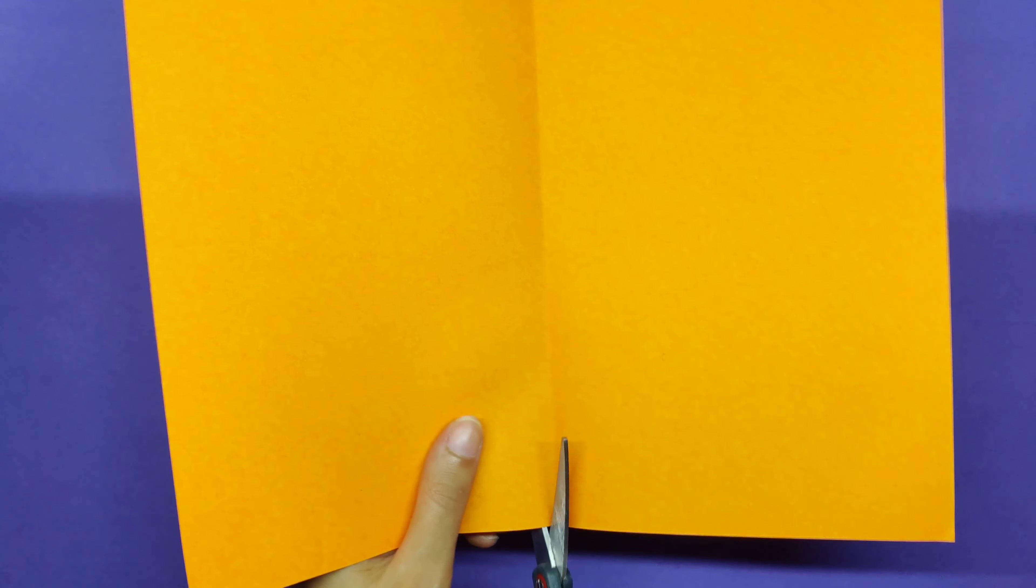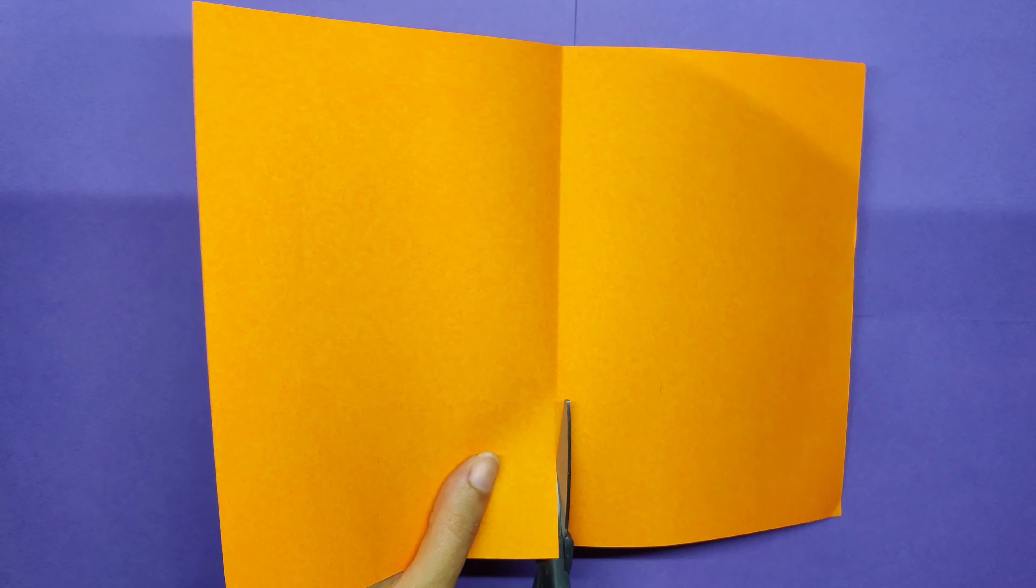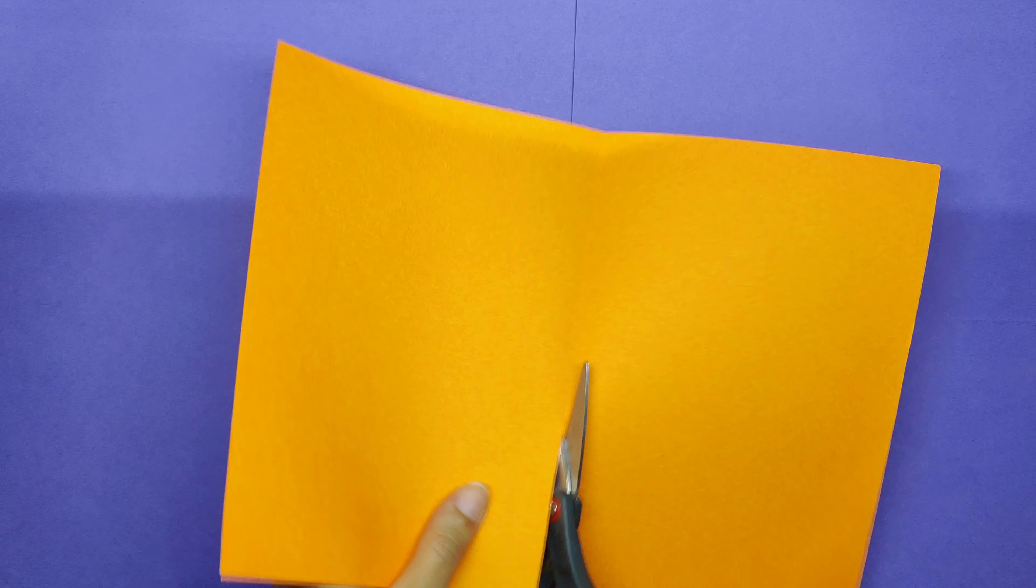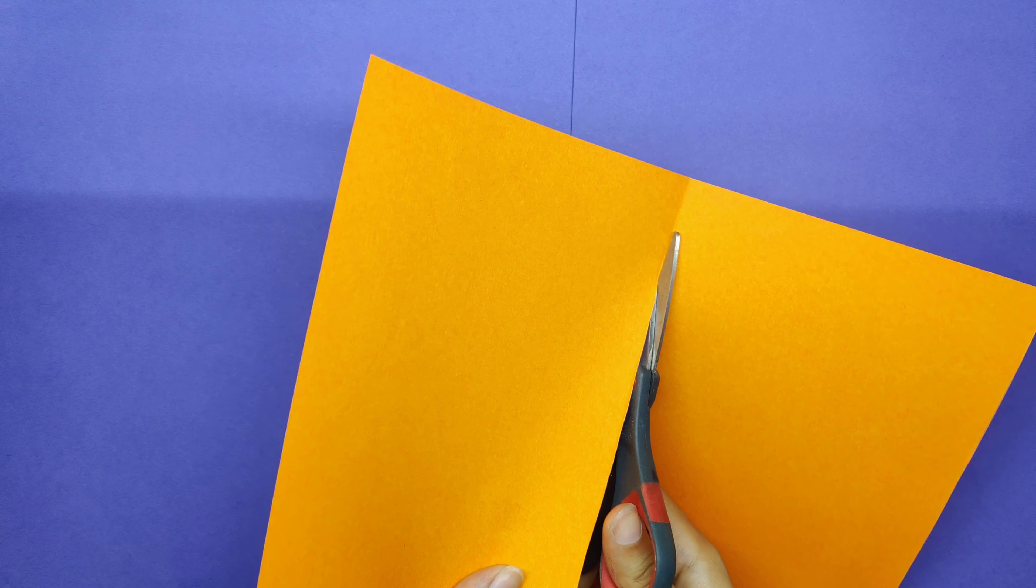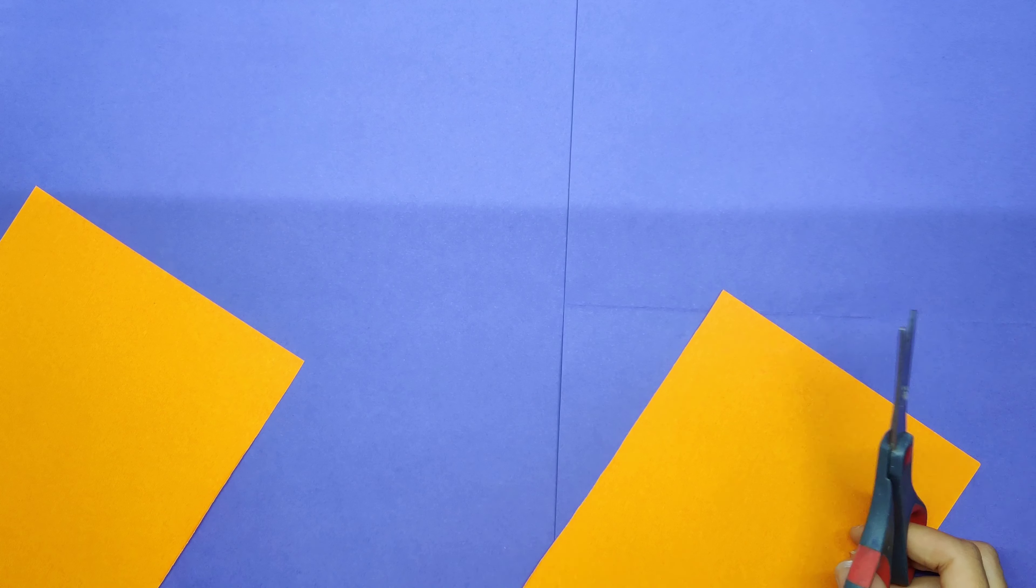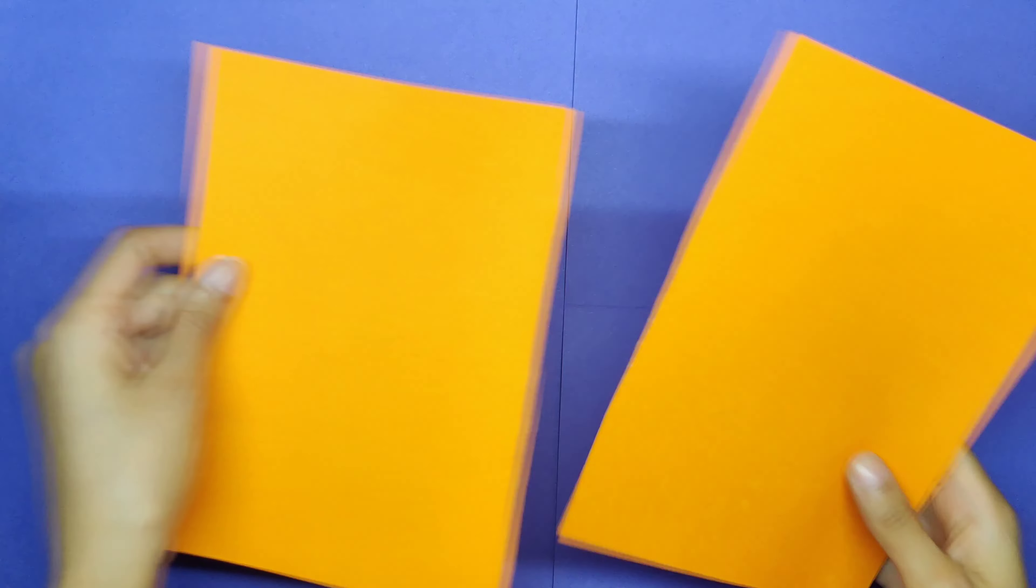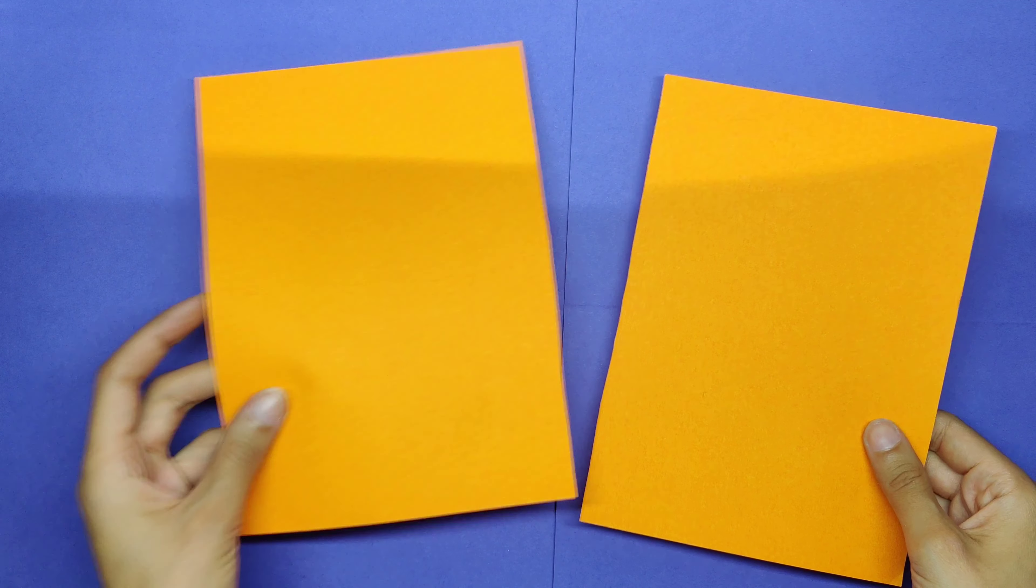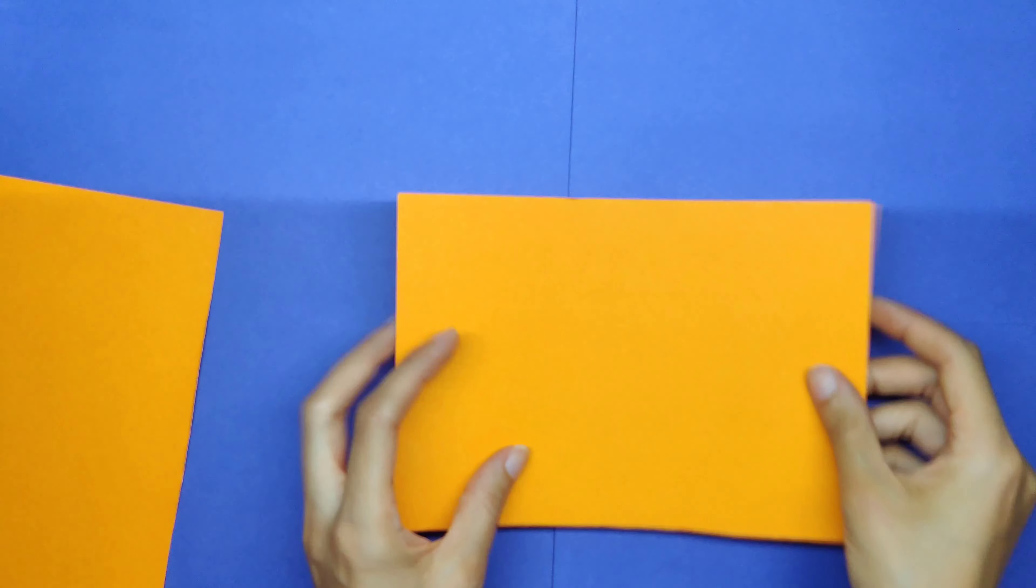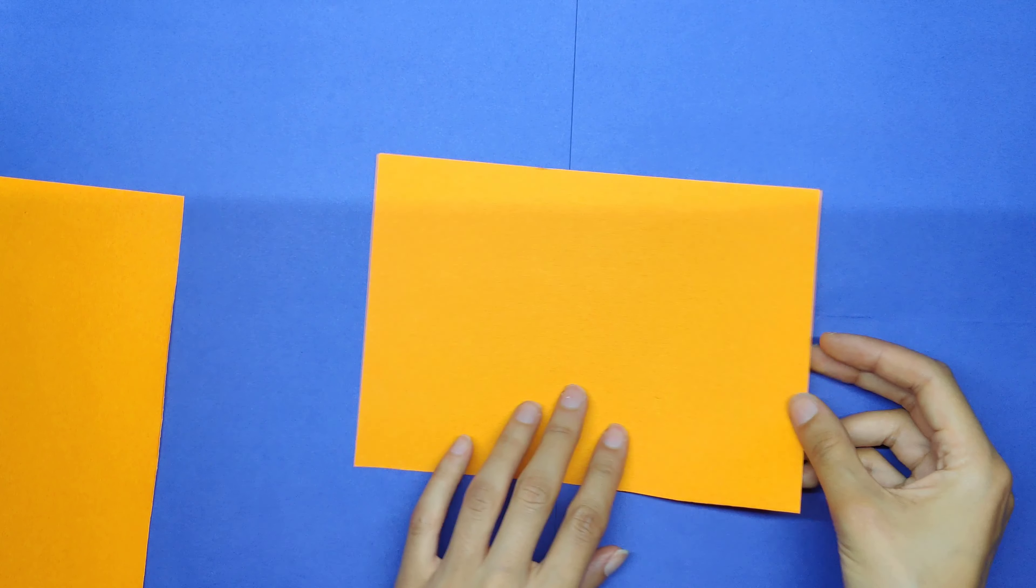Once you're finished, you fold, you are going to fold the line and cut out your paper into parts. So these two parts, one half is going to be the head of the cat and one half is going to be the body.